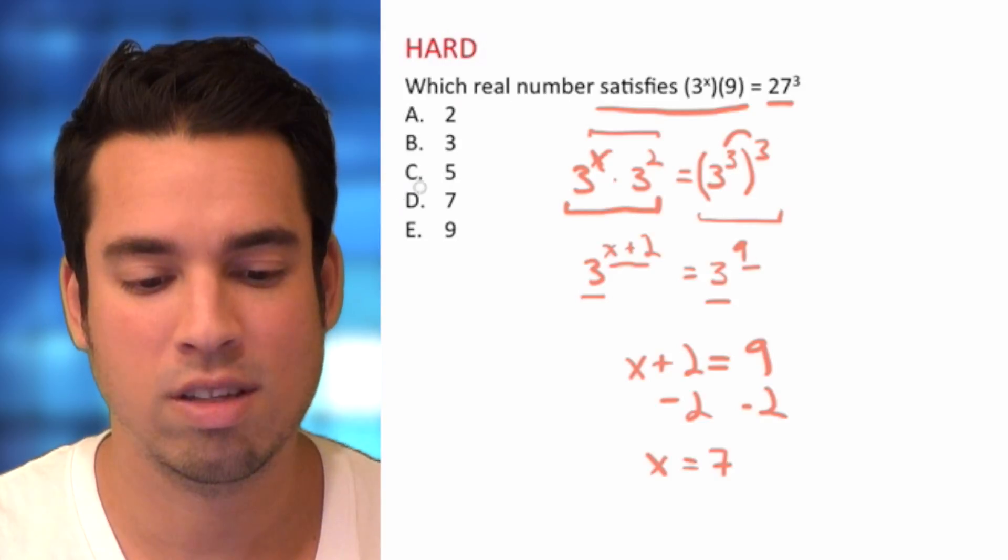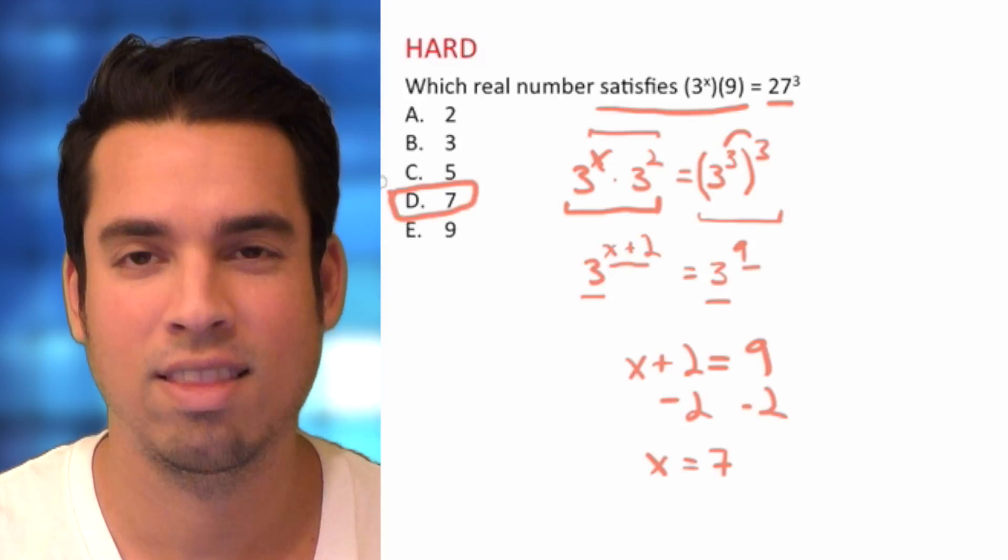If you know those, it's not too bad at all. So x equals 7, D is our final answer, and done. We'll see you next time.